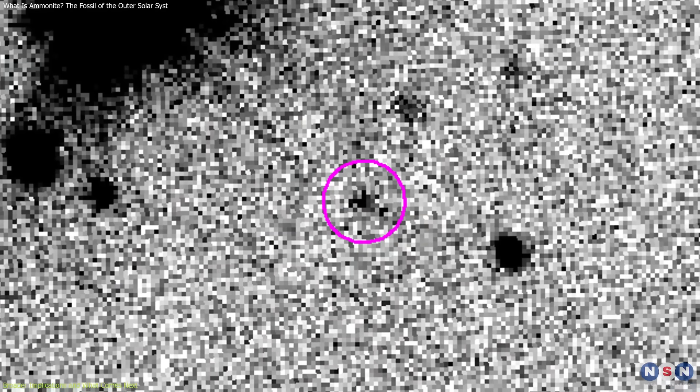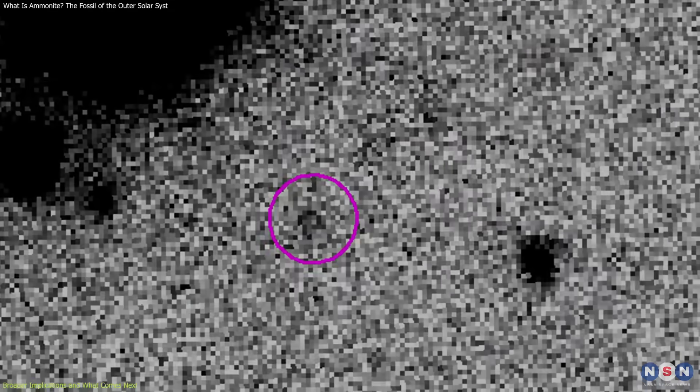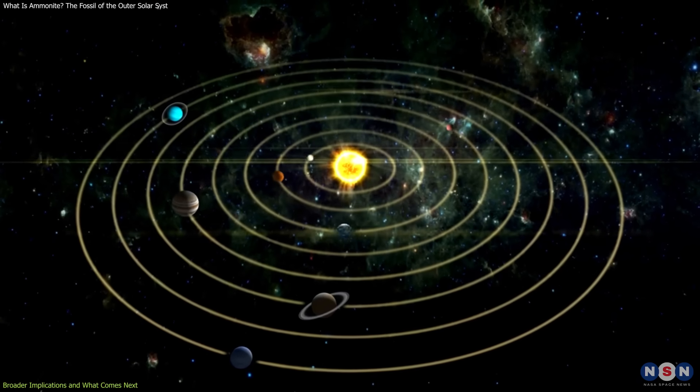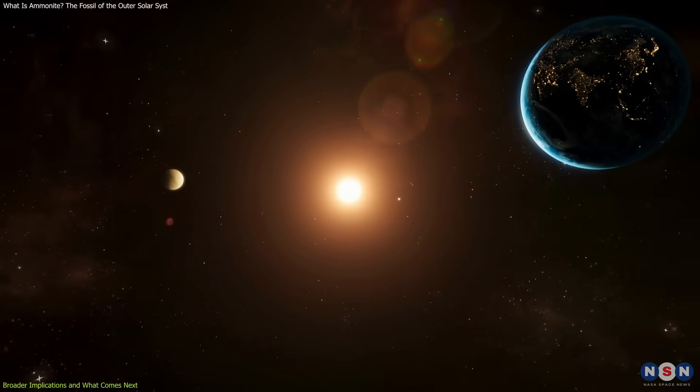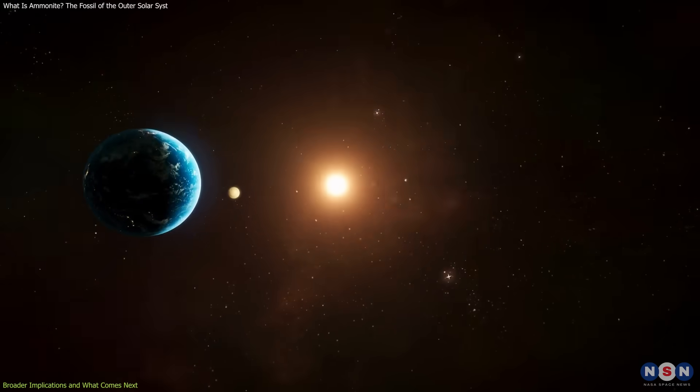In the meantime, objects like it serve another purpose. They help define the boundaries of our solar system, not just in terms of distance, but in terms of the gravitational reach of the Sun and its planets.